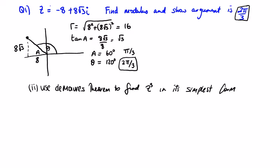Part two, you're asked to use De Moivre's theorem to write z cubed in its simplest form. Let's write out z first. z is equal to 16 by the cos of 2 pi over 3 plus i sine 2 pi over 3.